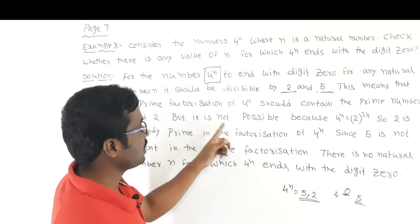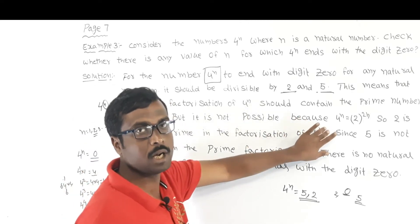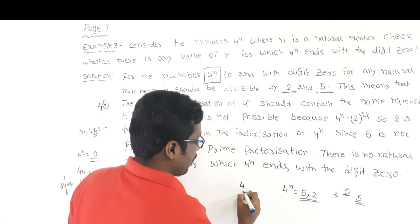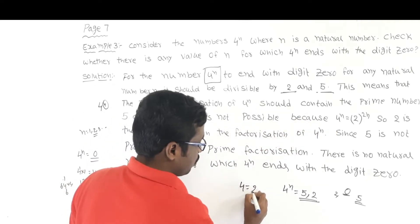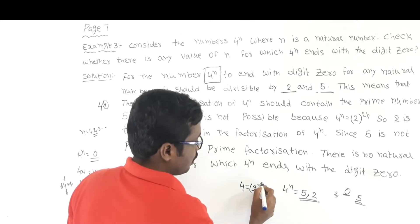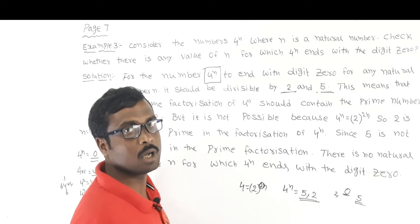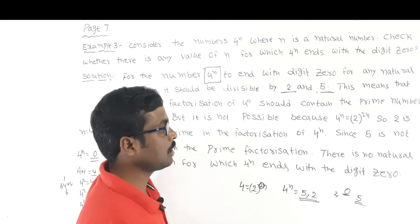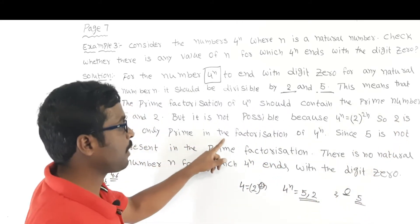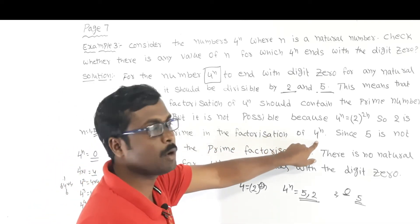But this is not possible, because the prime factorization of 4 to the power of n is 2 to the power of 2n. That means 2 is the only prime factor of 4 to the power of n.